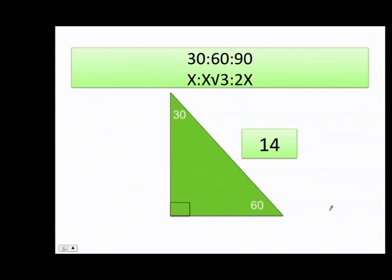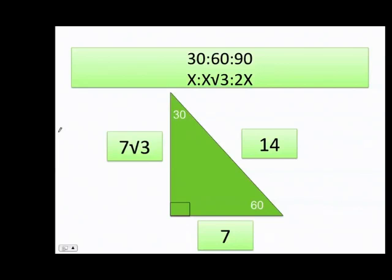Now they give me the hypotenuse, which is 2x. I want the value of x by itself. That means the value of the 30-degree angle equals 7, and the value of the 60-degree angle is 7 times the square root of 3.